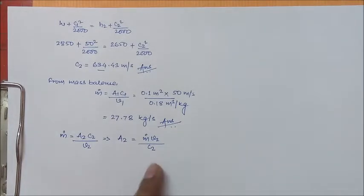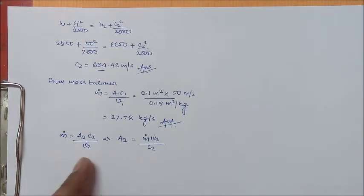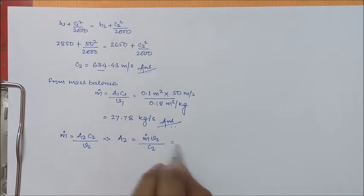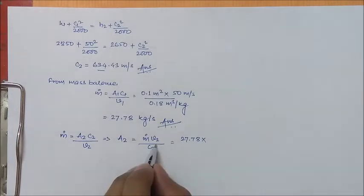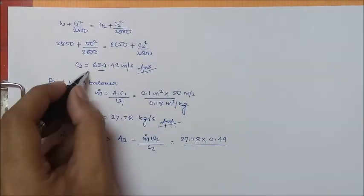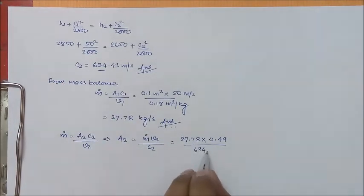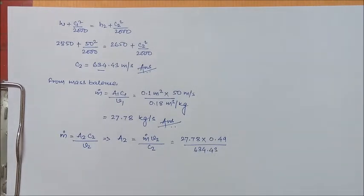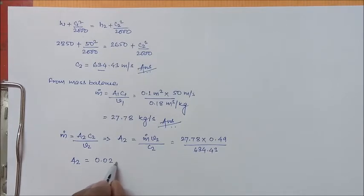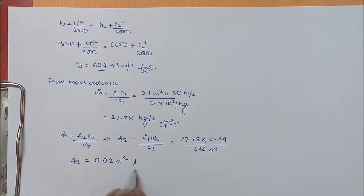M dot, just cross multiplication we are doing, and we got 27.78 into V2, which is given in the question, that is 0.49, and C2 we have calculated as 634.43. The final value of A2 comes as 0.02 meter square. This is your final answer.